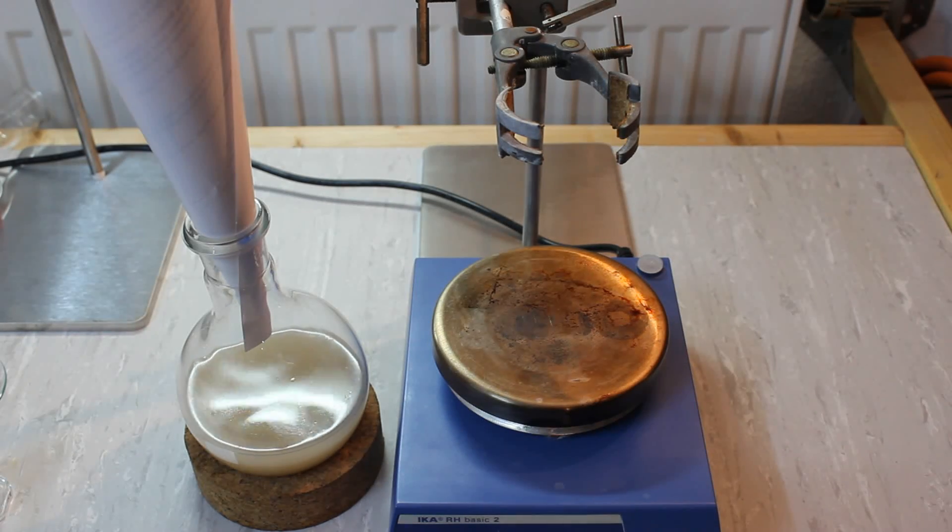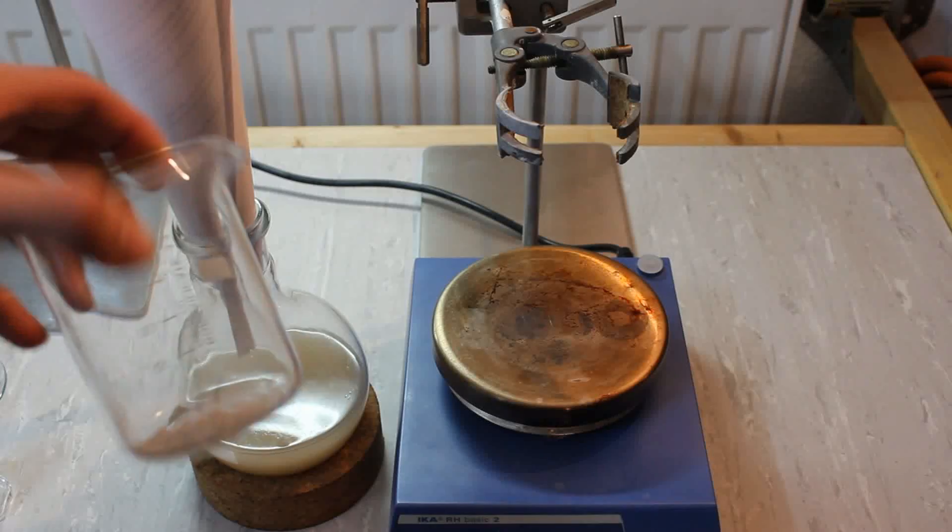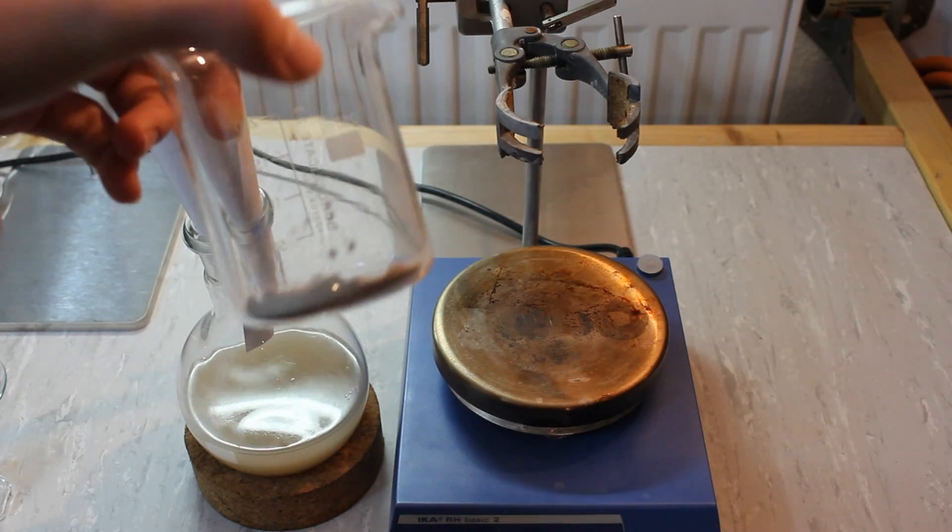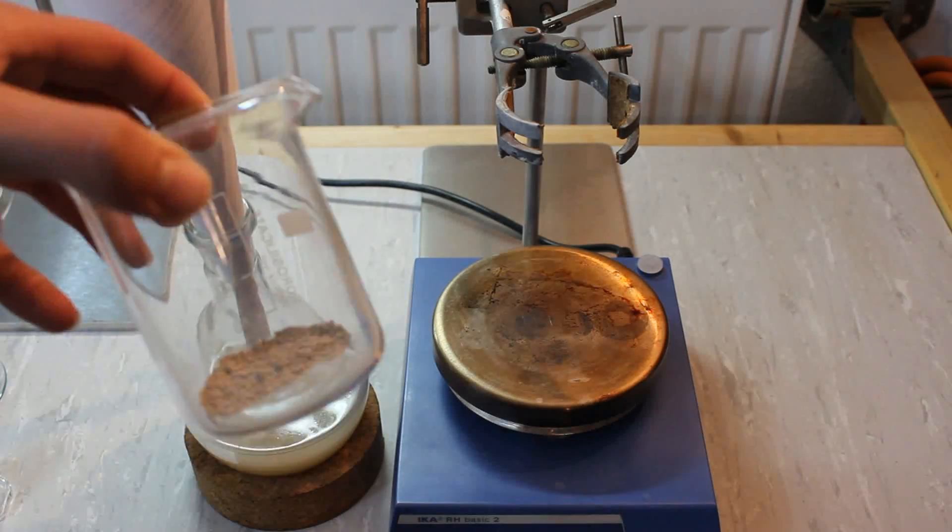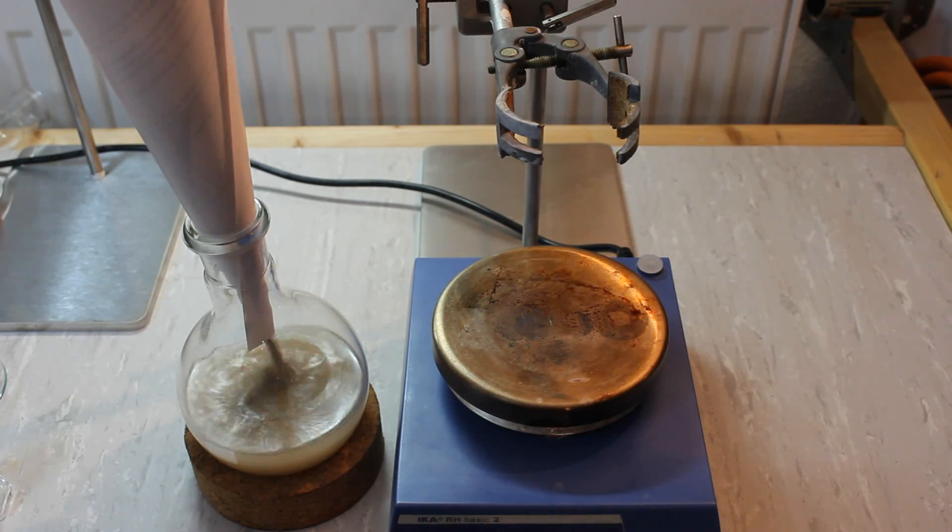Next we distill our acetone over some fresh calcium sulfate. The procedure calls for adding another 10 grams per liter of calcium sulfate. So since we have 250 milliliters of acetone, I weighed out another 2.5 grams of anhydrous calcium sulfate and I'm going to add it to our acetone right now.